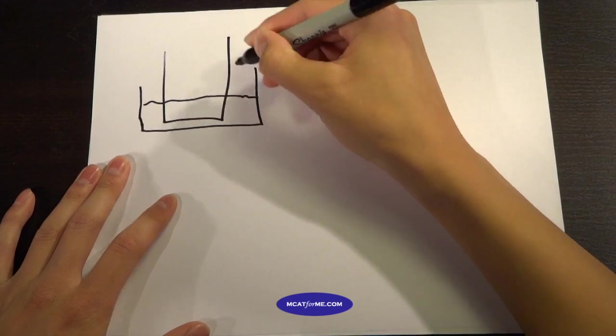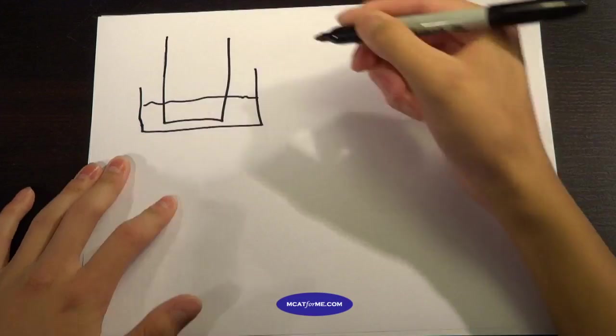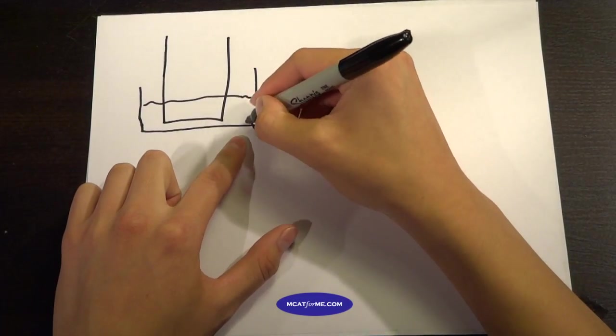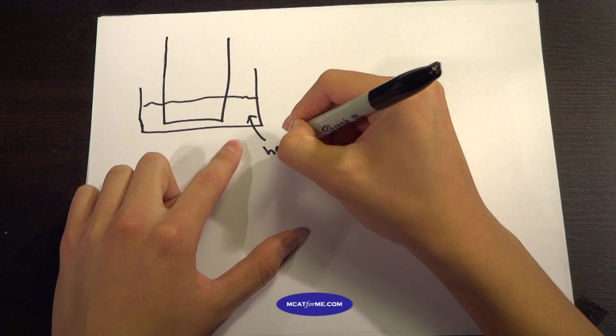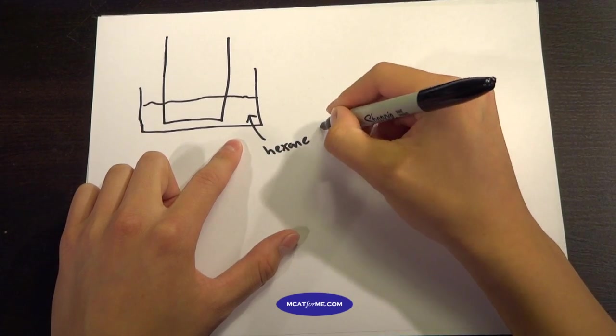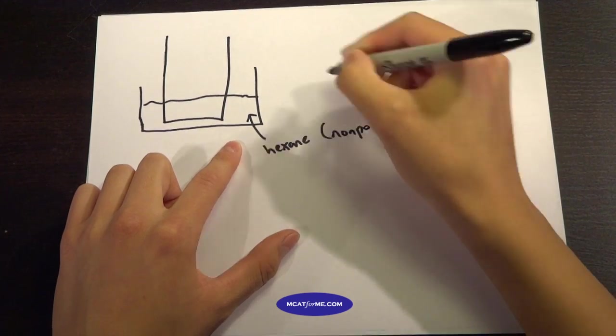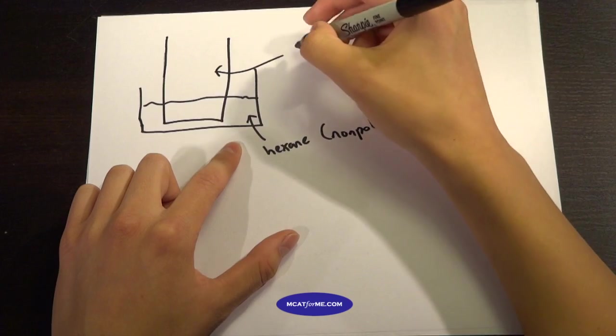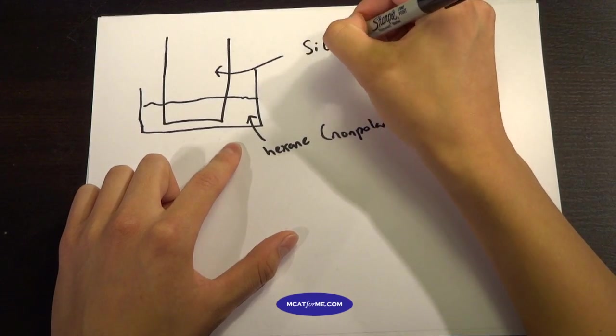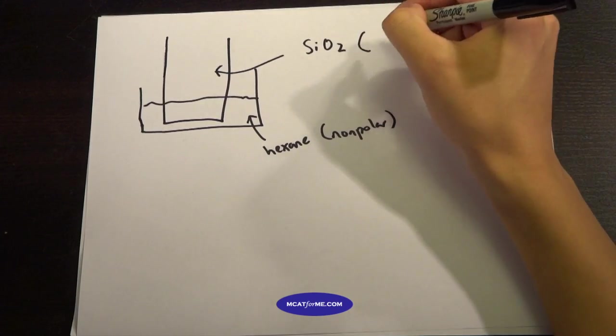But imagine we have this TLC paper right here. In the liquid right here we have hexane, generally, and this is nonpolar. And this TLC paper is generally made out of SiO2, and that is polar.